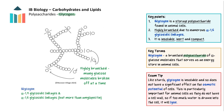Glycogen is a polysaccharide made up of alpha glucose molecules. It is highly branched due to numerous alpha 1,6 glycosidic linkages. It is the major storage carbohydrate of animals and is ideal for this role as it is insoluble, inert and compact. It needs to be more highly branched than amylopectin as animals are more metabolically active and need glucose released more rapidly. The more branches there are, the more ends there are for enzymes to hydrolyse the glycogen.